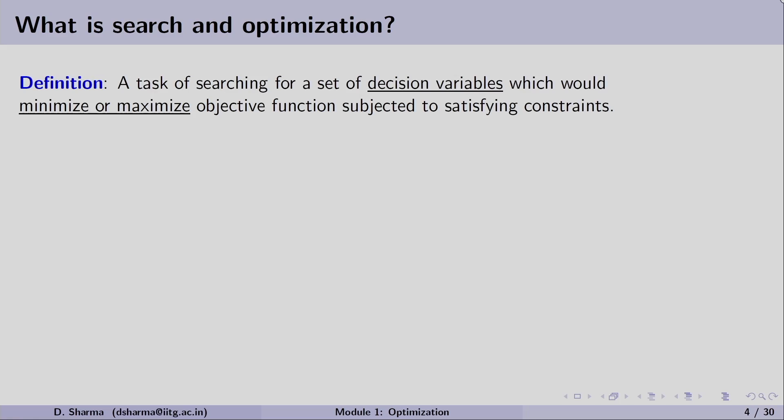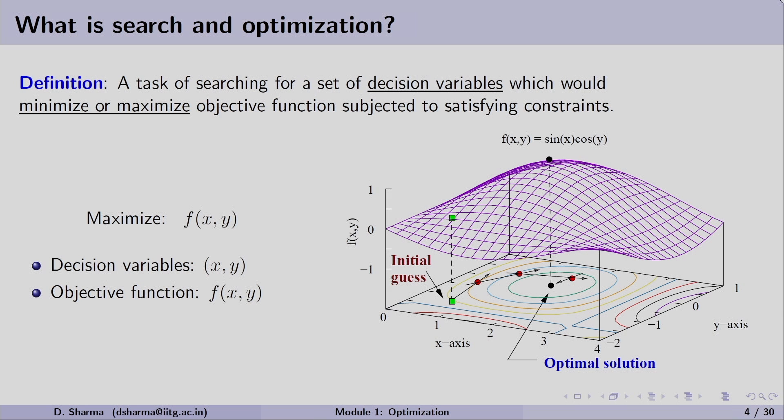Let us begin with Introduction to Optimization. The meaning of search and optimization is: it is a task of searching for a set of decision variables which would minimize or maximize an objective function subjected to satisfying constraints. Let us understand this definition with an example. On the right-hand side, we have a function f = sin(x) + cos(y). The problem is to maximize this function made of two variables x and y — called the objective function.